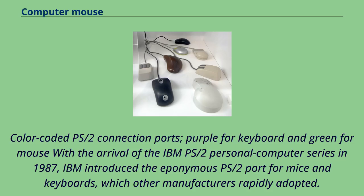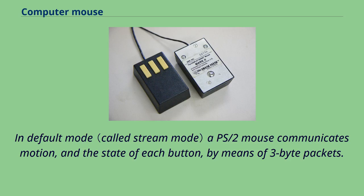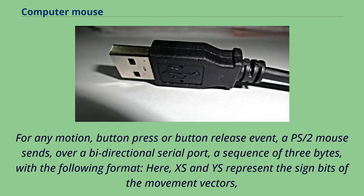With the arrival of the IBM PS/2 personal computer series in 1987, IBM introduced the eponymous PS/2 port for mice and keyboards, which other manufacturers rapidly adopted. The most visible change was the use of a round 6-pin mini DIN in lieu of the former 5-pin full-size DIN 41524 connector. In default mode, a PS/2 mouse communicates motion and the state of each button by means of 3-byte packets. For any motion, button press, or button release event, a PS/2 mouse sends over a bi-directional serial port a sequence of 3 bytes, where XS and YS represent the sign bits of the movement vectors.